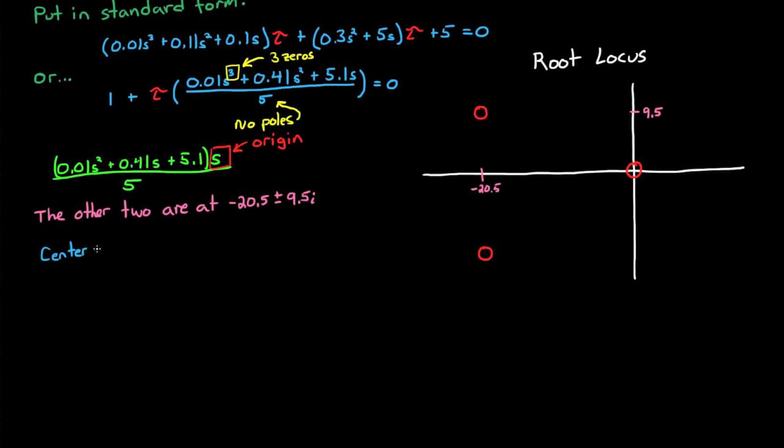And using rule 8, I can see that the three asymptotes cross the real axis at the center of mass of all of the poles and zeros, which works out to be about minus 13.7. And they cross the real line at angles plus 60, minus 60, and 180 degrees. So I'll draw those in with yellow dashed lines.